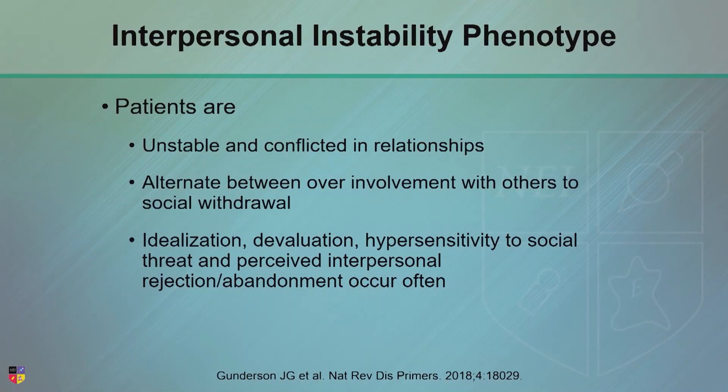I want to drive that point home. There's the interpersonal instability phenotype. Their DSM symptoms tend to cluster around conflicted relationships, over-involvement, enmeshment, isolation, withdrawal. They do that splitting, idealization, and devaluation more. And again, we can see that in their genes sometimes and their functional imaging sometimes.